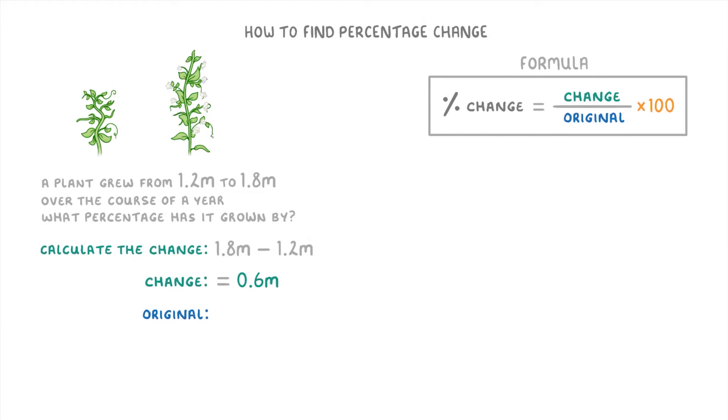Then the original part refers to the height that the plant grew from, or started at. So in this case, the 1.2m.